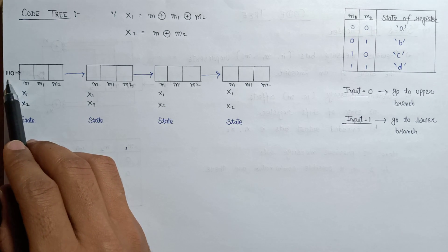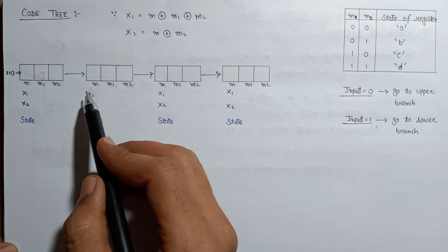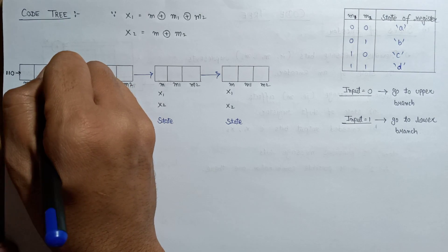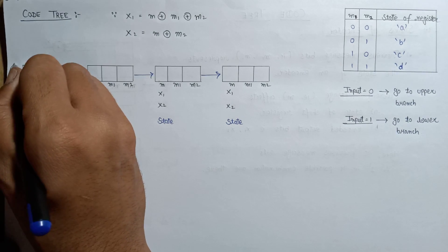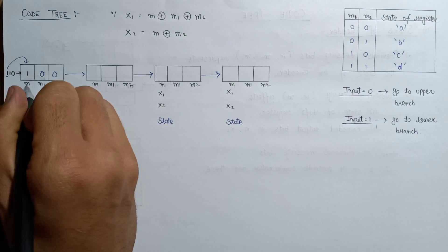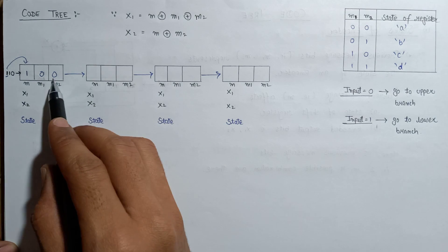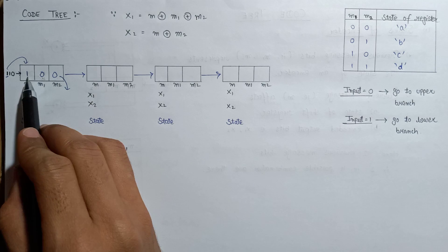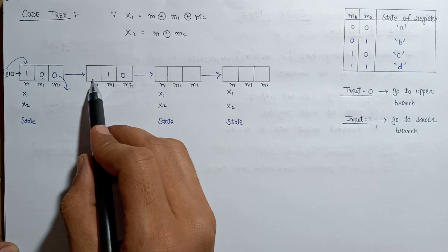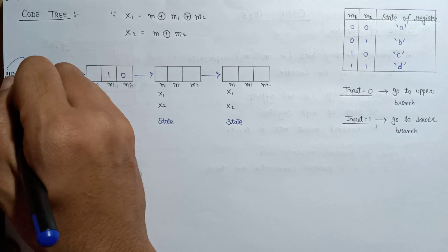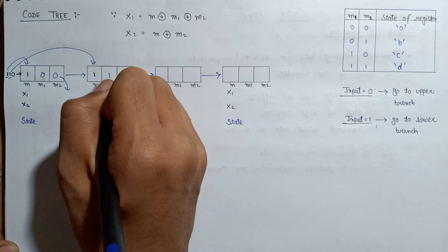Let us assume that m1 and m2 are initialized with 0. Now if we shift the first bit, which is 1, it will look like 1, 0, and 0. The shifting happens at regular intervals, so this 0 will be discarded, the 0 will shift over, and the 1 will go in, looking like 1 and 0. Then the second bit, which is 1, fills in, giving us 1, 1, and 0.